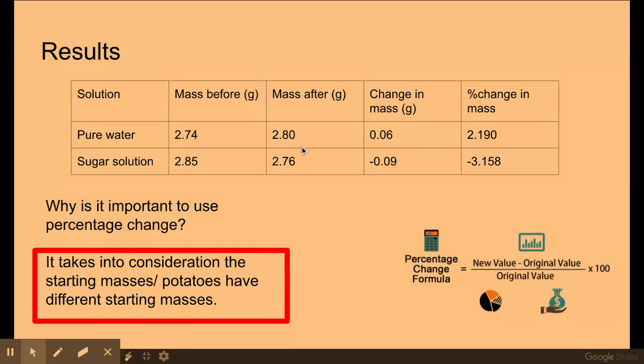Now I've also calculated here the change in mass. So my change in mass here, my mass after take away my mass before. As you can see here, my mass here is positive because my potato cylinder has increased in mass. So my change in mass in grams, it increased by 0.06 grams.